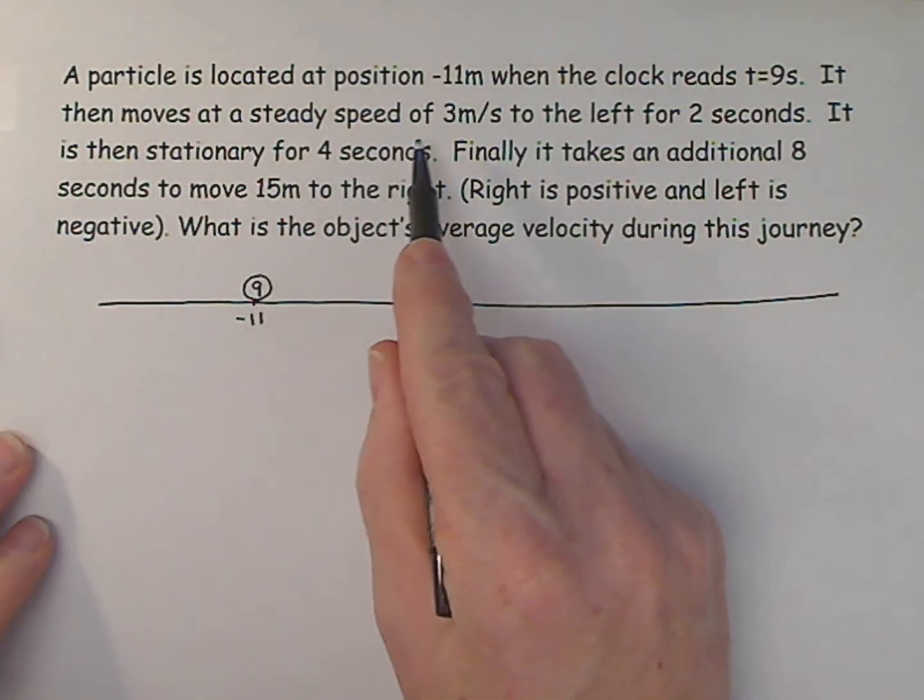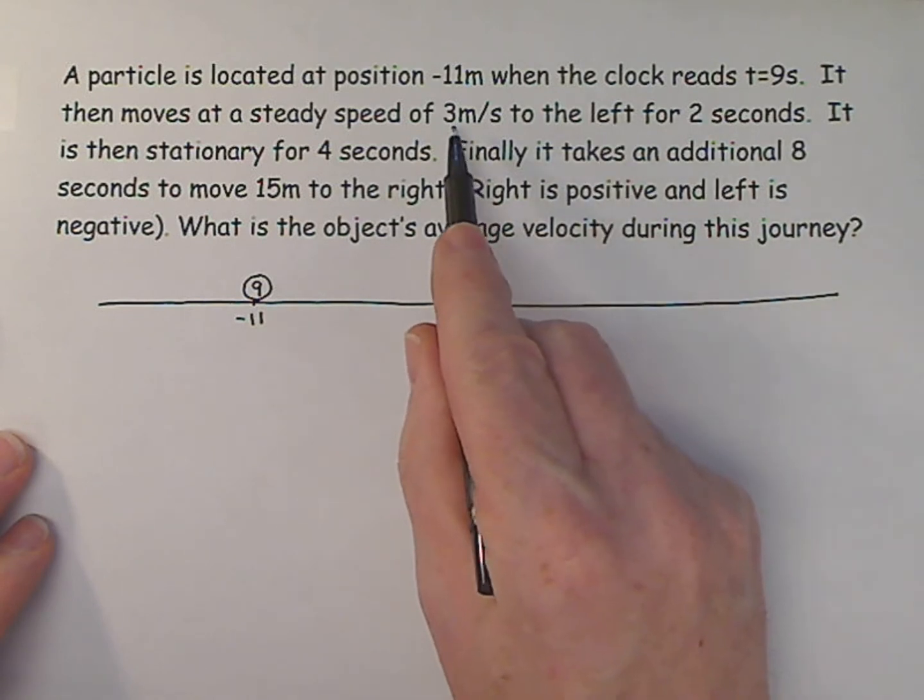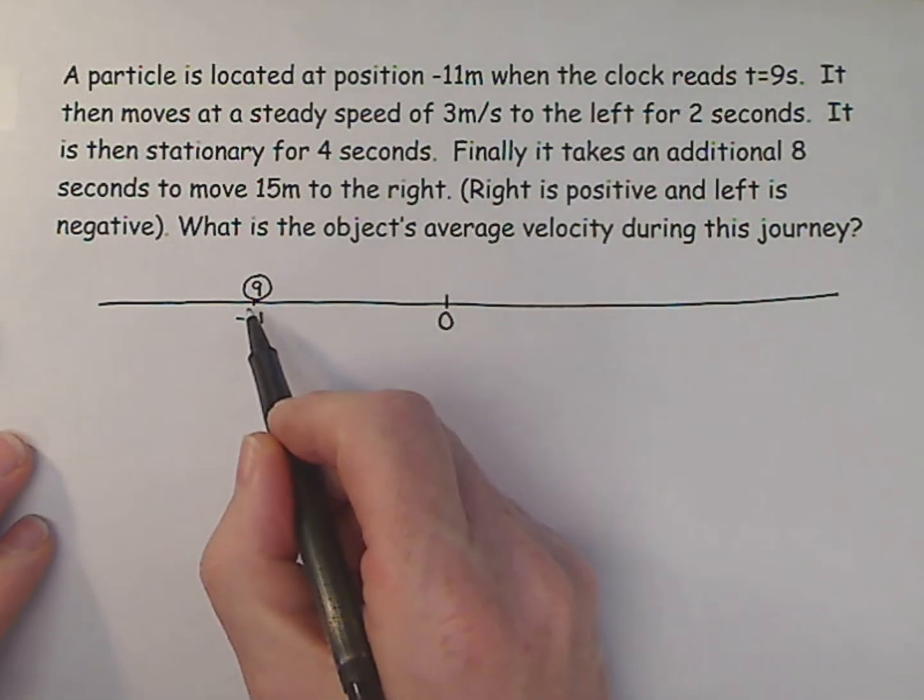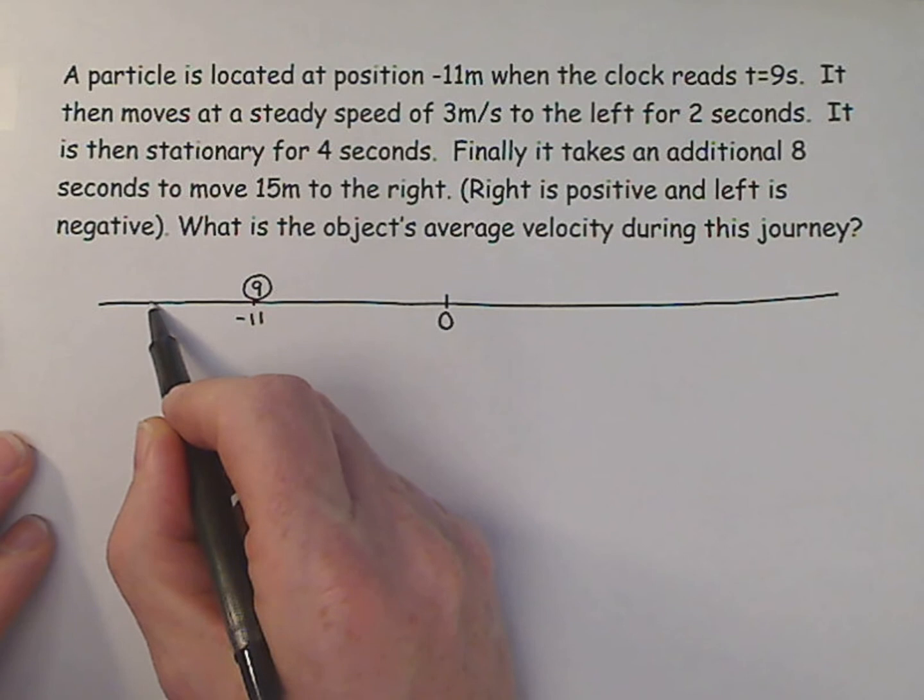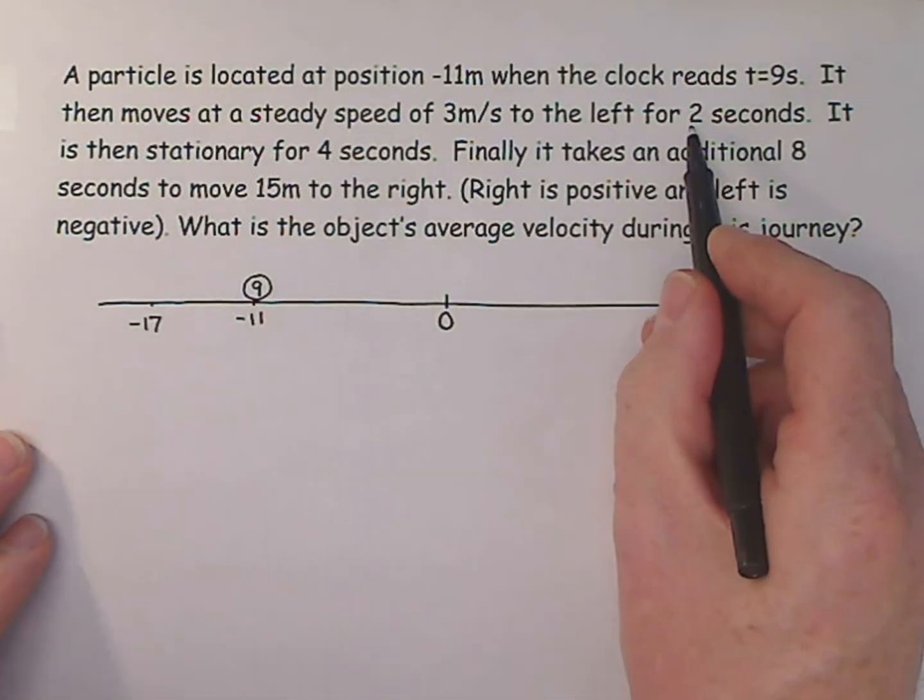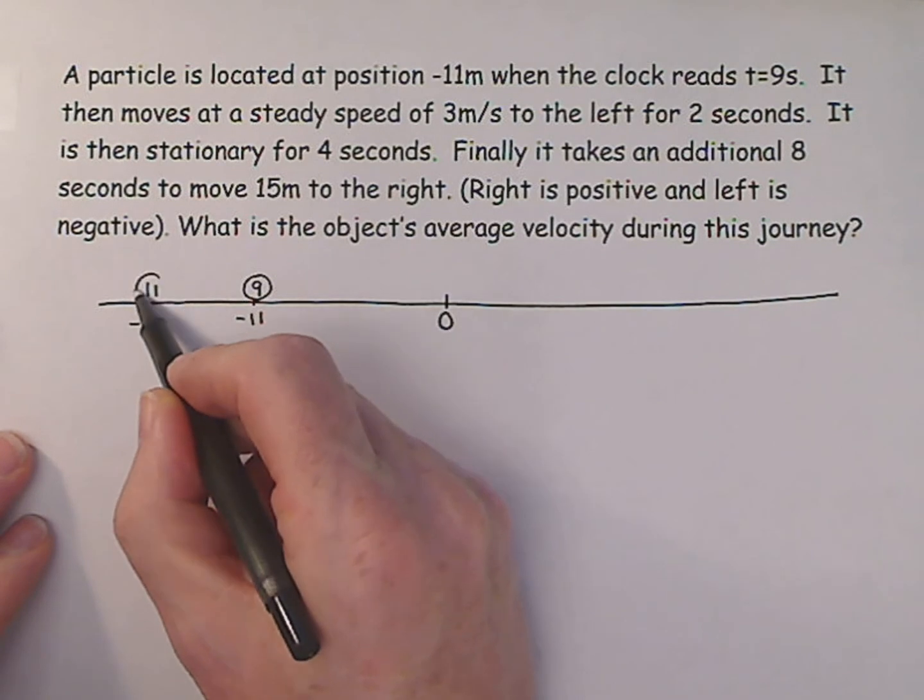It then moves at a steady speed of 3 meters per second to the left for 2 seconds. 3 times 2 seconds is 6. So it's going to go from minus 11, 6 to the left. So that minus 11 goes to minus 17. That's minus 17. And the clock has gone from 9 an additional 2 seconds. So that's now reading 11.